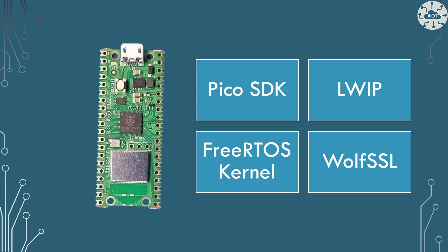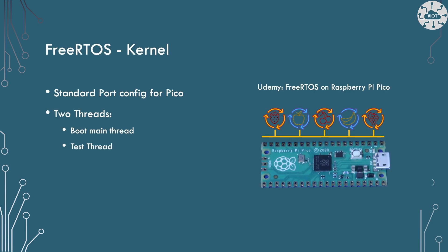In the last video, to produce a socket I used three libraries: the PICO SDK, LWIP, and FreeRTOS Kernel. To secure the socket I'm adding one more library called WolfSSL. WolfSSL is a well-documented library for TLS under the GPL version 2 license, with commercial versions and support also available. On FreeRTOS, we're using a vanilla project setup with a standard set of porting configurations, and the configuration options are in the port FreeRTOS kernel folder in the example.